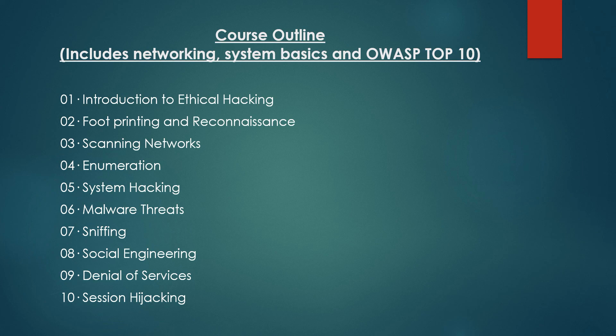The second module is footprinting and reconnaissance, also called information gathering. We are going to see different tools and techniques for information gathering. Then we get into scanning networks — we will scan systems, web applications, and networks. After that comes enumeration, which covers advanced information gathering. And in system hacking, we are going to hack a live Windows system and gain access to it.